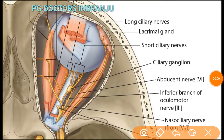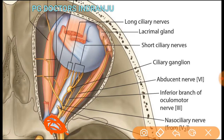The apex is made up of the ring of the orbit where the extrinsic muscles originate, located around the optic foramen. This structure is called the apex.